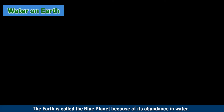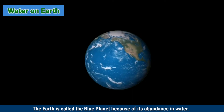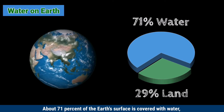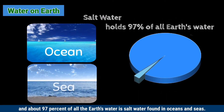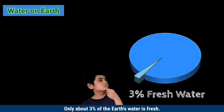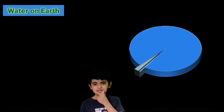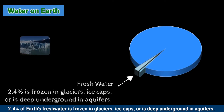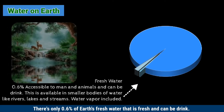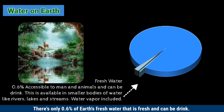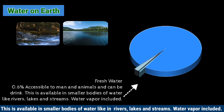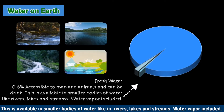Water on Earth. The Earth is called the Blue Planet because of its abundance in water. About 71% of the Earth's surface is covered with water, and about 97% of all Earth's water is salt water found in oceans and seas. Only about 3% of Earth's water is fresh. Of that, 2.4% is frozen in glaciers, ice caps, or deep underground in aquifers. There's only 0.6% of Earth's fresh water that is drinkable, available in rivers, lakes, streams, and water vapor.